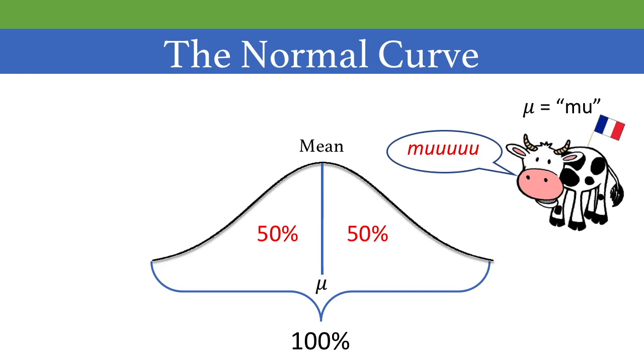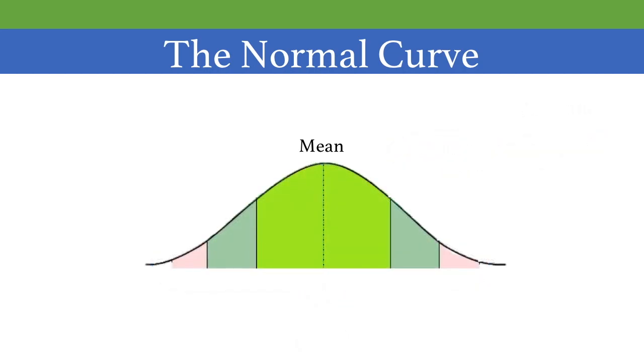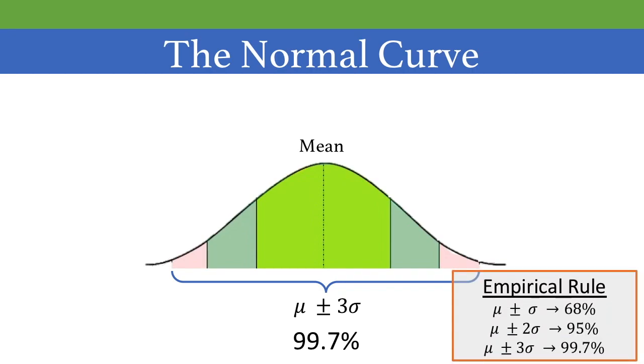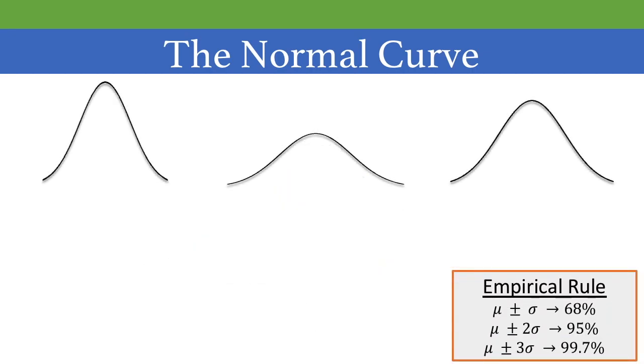In addition, if you go one standard deviation on either side of the mean, you'll end up encompassing 68% of the data. Two standard deviations on either side covers 95% of the data. And three standard deviations on either side covers 99.7% of the data. This is called the empirical rule. And it works for any normal distribution.